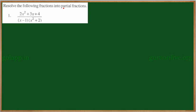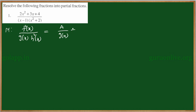See this problem. Resolve the following fractions into partial fractions: 2x squared plus 3x plus 4 divided by (x minus 1) into (x squared plus 2). Our motive is to find the partial fractions for the given function, which is f(x) of order 2 divided by g(x) of order 1 and h(x) of order 2, which can be resolved as A over g(x) plus (Bx plus C) over h(x) of order 2.